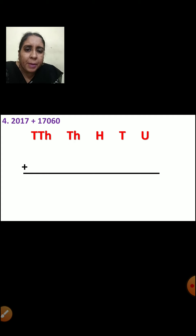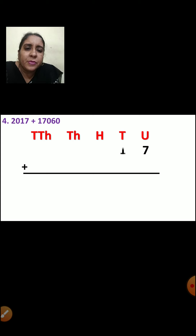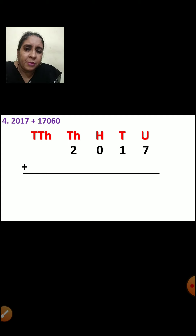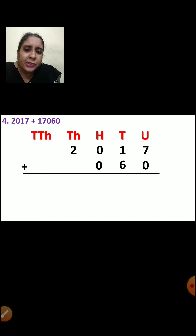Now let us see where 7 will come — units place. 1 will come in tens place. 0 will come in hundreds place. 2 will come in thousands place. Now for the next number: 0 will come in units place. 6 will come in tens place. 0 will come in hundreds place. 7 will come in thousands place. And 1 will come in ten-thousands place.